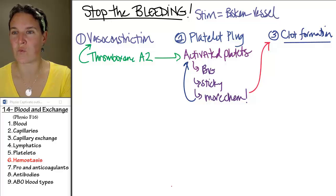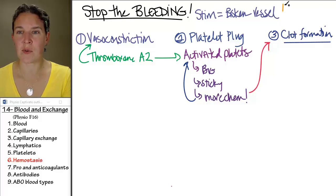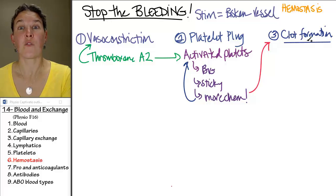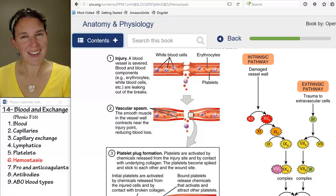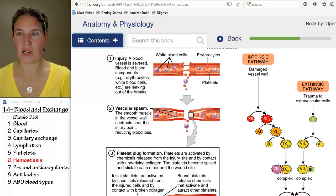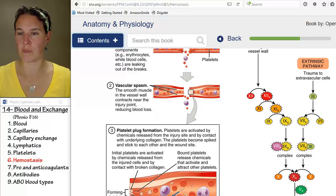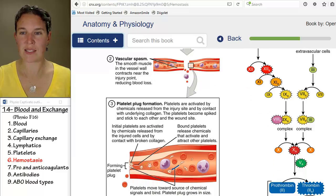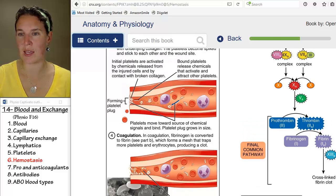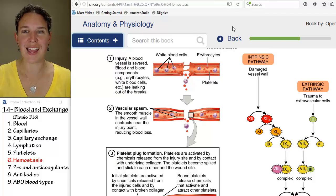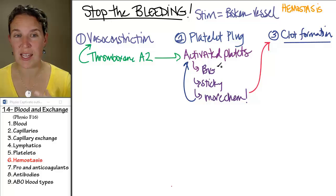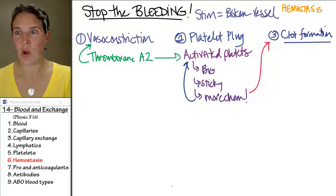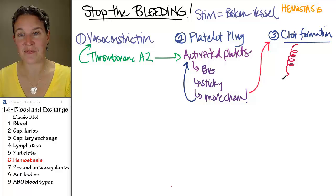This is the only part of the process that's about forming a blood clot. All the rest is about hemostasis — stopping the bleeding. Forming a clot is just one strategy to stop the bleeding. Clot formation is a cascade of chemical reactions. Chemicals from the platelet plug and chemicals from the damage will initiate clot formation, and you end up with a cascade — actually multiple cascade routes — of chemical reactions.